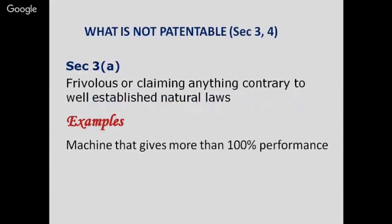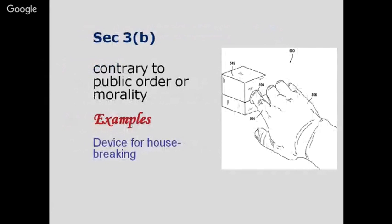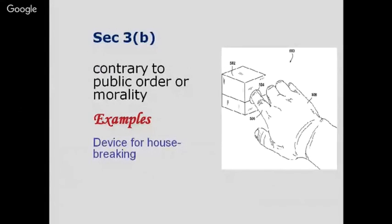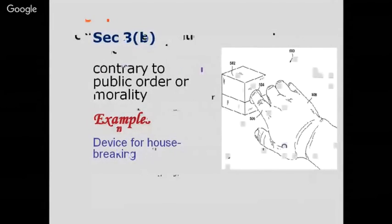Under Section 3 and 4, certain things cannot be patented. Section 3(a) covers frivolous claims or anything contrary to well-established natural laws — for example, a machine that gives more than 100% performance is non-patentable. Claims contrary to public order or morality, like a device for housebreaking, are also not patentable.